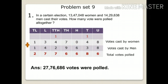To understand the problem better and to know what to write as a statement, ask this question: What is 13,47,048 and what is 14,29,638? The answers to these questions will help us form the statement for the solution. 13,47,048 are the number of women votes, so we write the statement as 'votes by women.' And 14,29,638 are the number of men votes, so we write the statement as 'votes by men.'